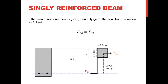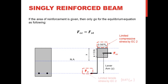From first principles, the forces at equilibrium should be equal. We have a compressive force and a tensile force. For a singly reinforced section, above the neutral axis we have the compressive force and below it the tensile force taken by the steel, giving us Fcc = Fst. For Eurocode 2 users, the compressive strength of the concrete is limited to 0.567fck, which accounts for a partial factor of safety.